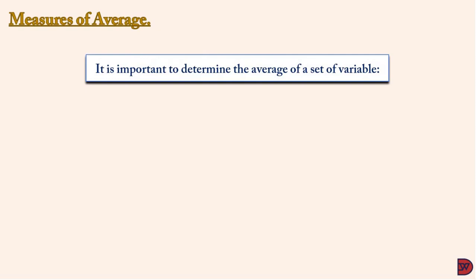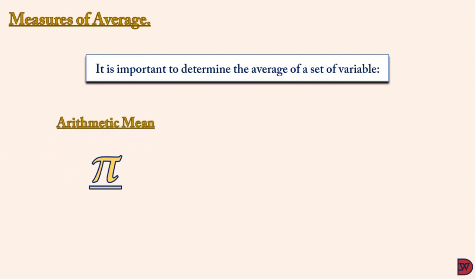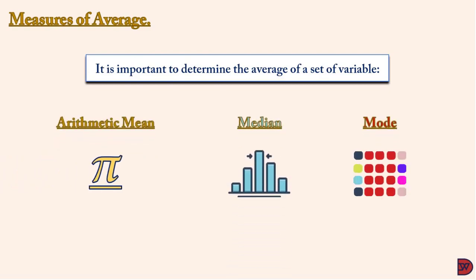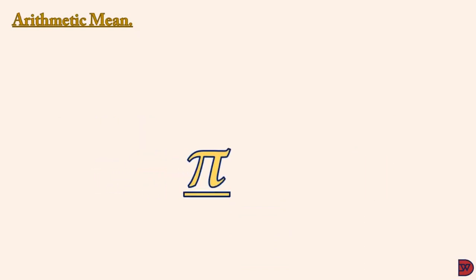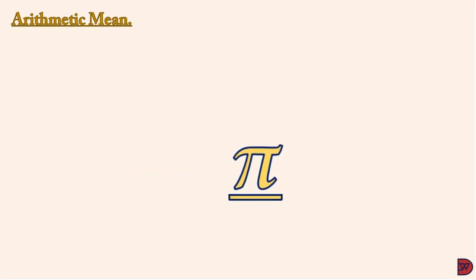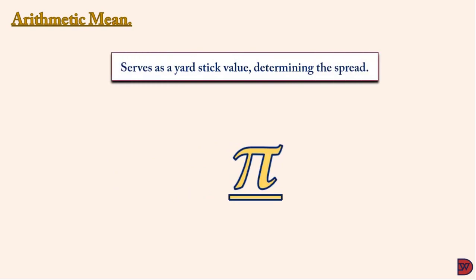For a frequency distribution to be meaningful, there are certain tools or calculations we have to employ. The first is arithmetic mean, the second is median, and the third is mode. Arithmetic mean is what we normally call the average. It serves as a statistic of measurement and determines the spread. The arithmetic mean picks the total frequency and shares it equally among the responses.